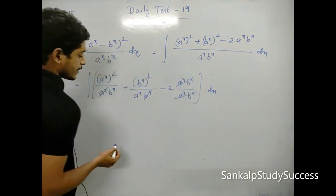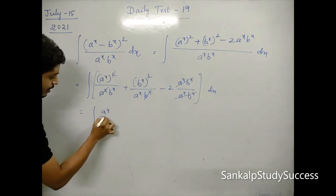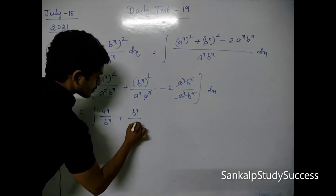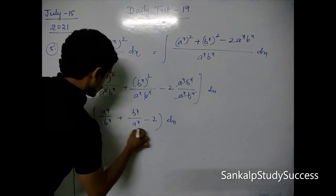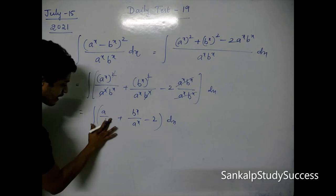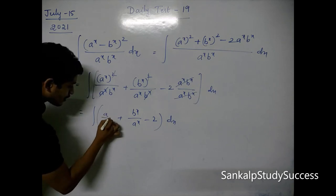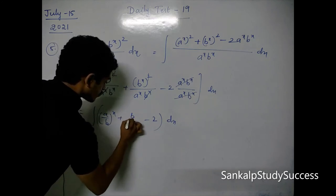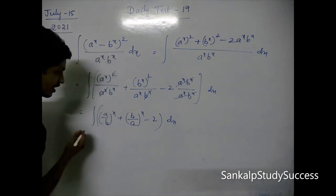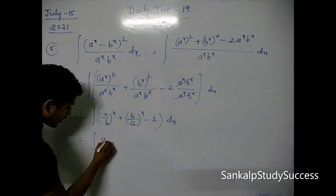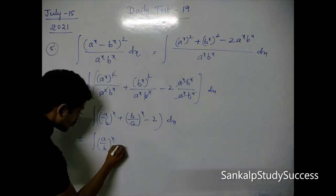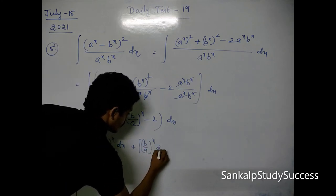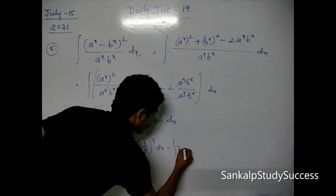After cancellation, we get: aˣ/bˣ + bˣ/aˣ - 2 dx. Now rewrite: aˣ/bˣ = (a/b)ˣ and bˣ/aˣ = (b/a)ˣ. Split into: integral (a/b)ˣ dx, plus integral (b/a)ˣ dx, minus integral 2 dx.